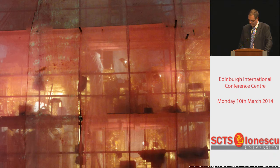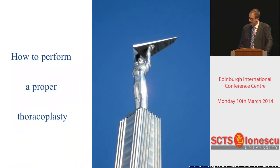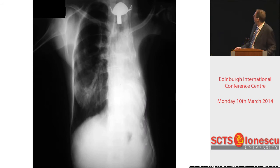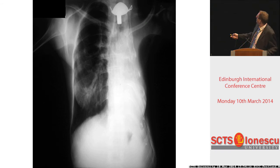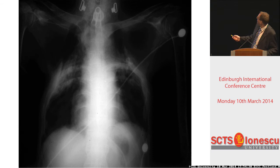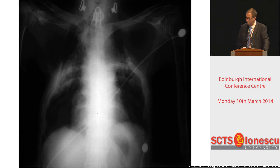So let us go back to the present and ask ourselves how we could perform a proper thoracoplasty. This is an extreme example of a complete hemithoracectomy, and you see this has been made a while ago because there is some calcification — because you leave the periosteum in place, you have a regeneration of bony tissues. This is another extreme example in a patient with bilateral apical aspergillus fungus balls who could not tolerate the resection.